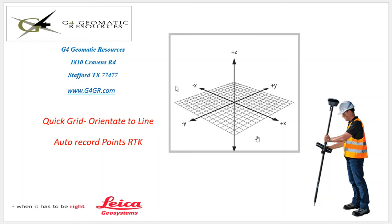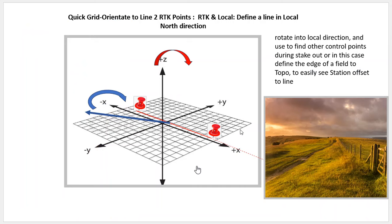I'm going to quickly go over the auto-record points in GPS as well. With Quick Grid, when we orientate to a line, we can pick two points and orientate, calling the starting point 0,0 to create a local grid. As we move up and down the line for a topo, our northing and easting will be our station offset. Imagine an open field where the easiest way to collect data is to walk up and down or drive an ATV.